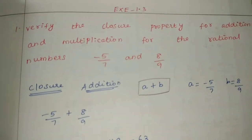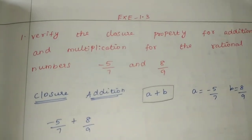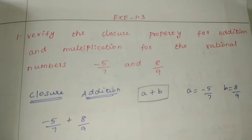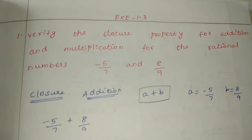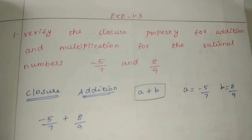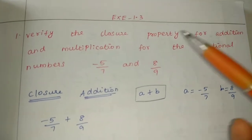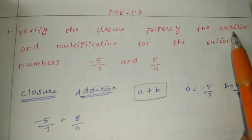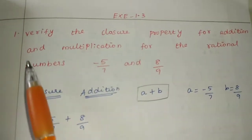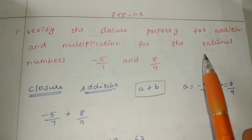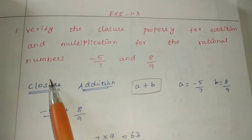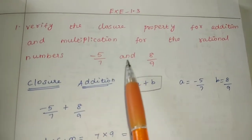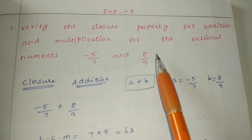Hello friends, I am Saranya. Now we will talk about 8th Standard Math, Chapter 1, Exercise 1.3, Question 1: verify the closure property for addition and multiplication for the rational numbers minus 5 by 7 and 8 by 9.